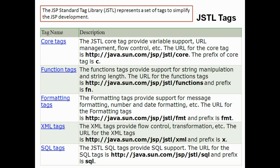Now let's look at JSTL — the JSP Standard Tag Library, also called the Java Standard Tag Library. It represents a set of tags to simplify JSP development. For exam questions about JSTL tags, you need to know four or five different tag types. The first is core tags, which provide variable support, URL management, and flow control. The prefix for core tags is 'c'.